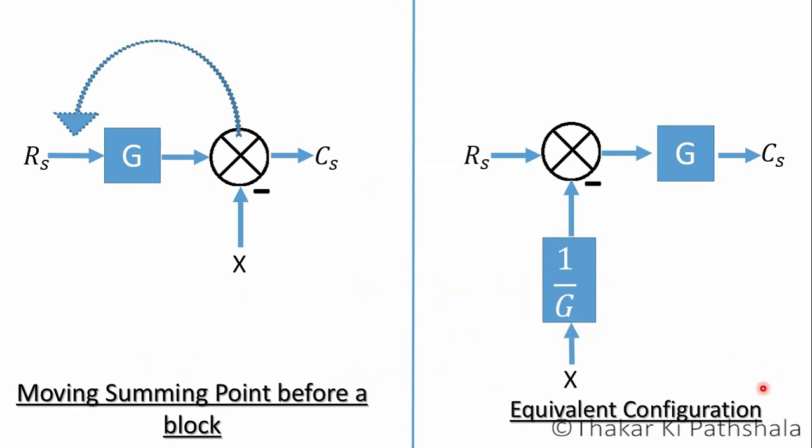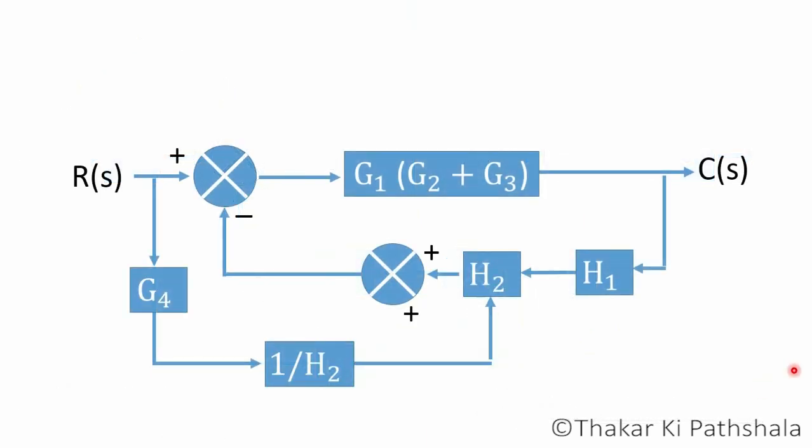we have to add inverse gain of that block in the path of the summing point. So as per the rule, if we move the summing point before the block, we have to add inverse gain of block H2. After applying the process, the configuration will look like this.